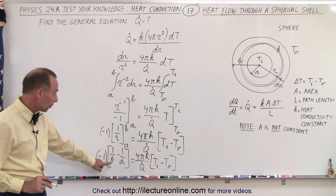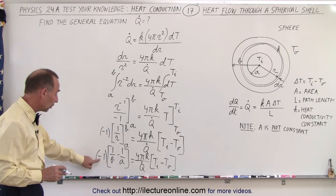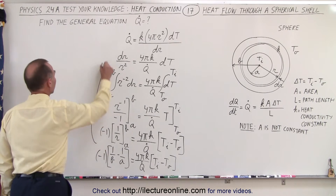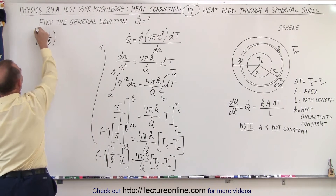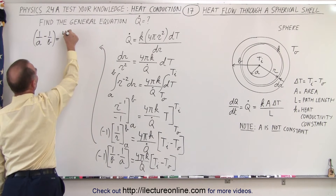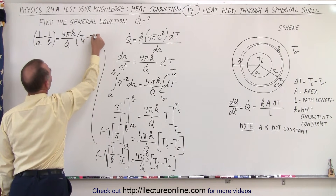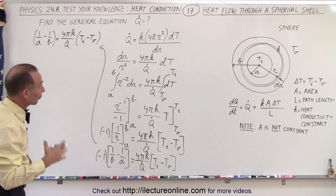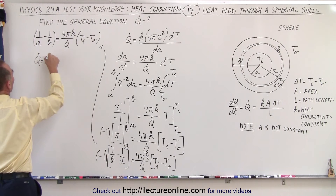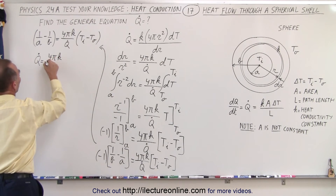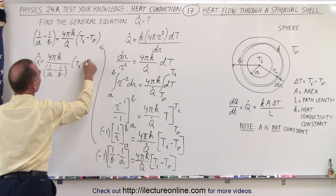Notice that B is a larger number than A, so 1 over B is smaller than 1 over A; subtracting 1 over A from 1 over B gives a negative quantity. Multiplying through by the negative 1, we can rewrite the equation as 1 over A minus 1 over B — a positive quantity — equals 4πK over Q dot times (T inside minus T outside). Since we're looking for Q dot, we rewrite this as Q dot equals 4πK over (1 over A minus 1 over B), all multiplied by (T_I minus T_O).